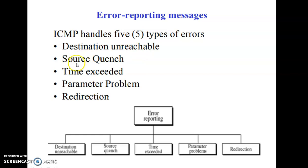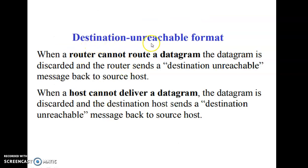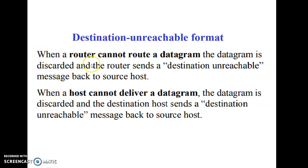The five error reporting messages are: destination unreachable, source quench, time exceeded, parameter problem, and redirection. The first is destination unreachable — this message can be generated by a router or a host. From the name itself we can understand that the packet flowing in the network is not reachable to the destination. When a router cannot route a packet, it sends the destination unreachable message to the source host, and likewise when a host cannot deliver a datagram.